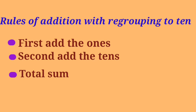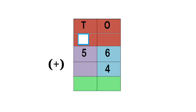Rules of addition with regrouping to ten. One: add the ones. Two: add the tens. Total sum. For example, see this sum.